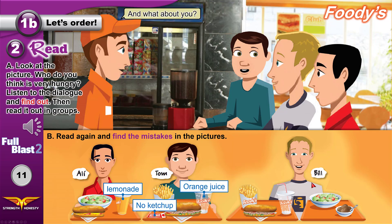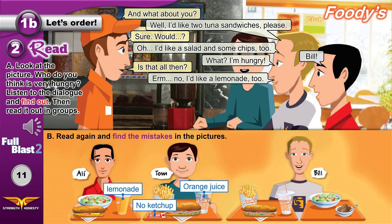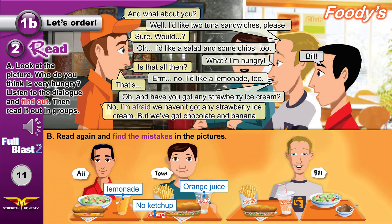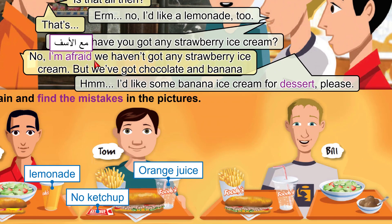Now Bill: What about you? Well, I'd like two tuna sandwiches, please. Sure. I'd like a salad and some chips too. Bill, what? I'm hungry! Is that all? No, I'd like a lemonade too. Oh, and have you got any strawberry ice cream? No, I'm afraid we haven't got any strawberry ice cream, but we've got chocolate and banana. I'd like some banana ice cream for dessert, please. "I'm afraid" is a polite way of saying "I'm sorry, we don't have that." Dessert is sweet food you eat at the end of your meal, like cake, ice cream, or cookies.